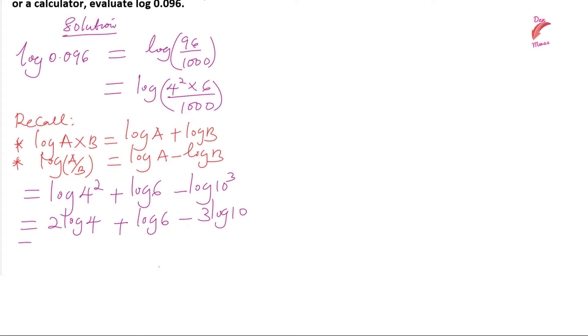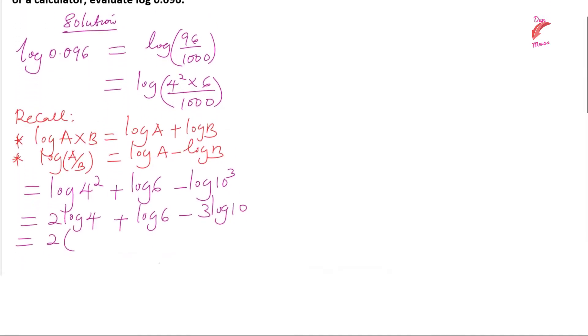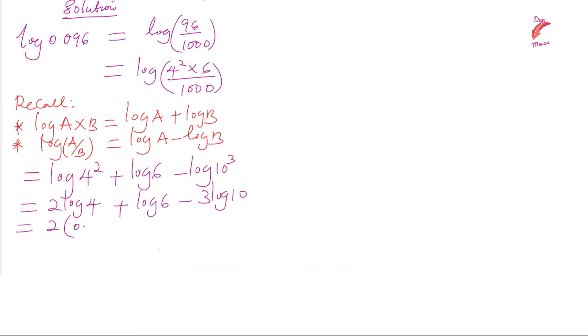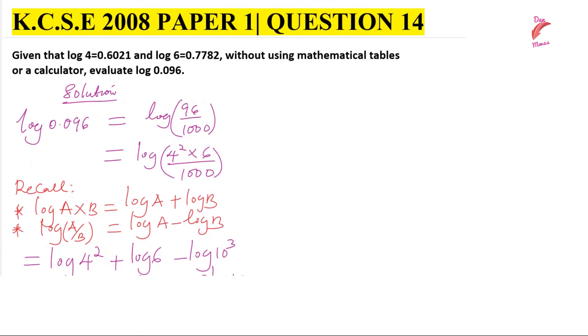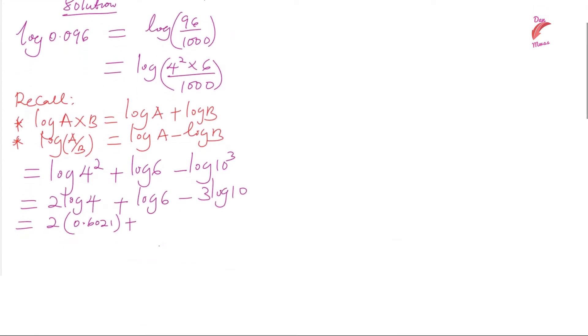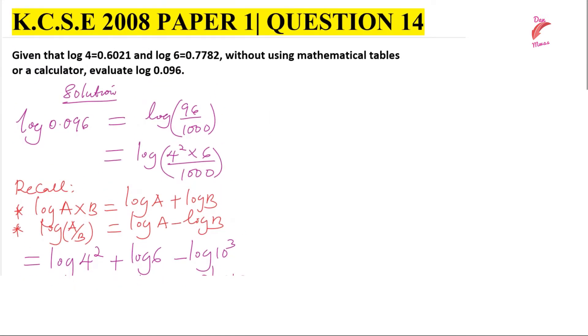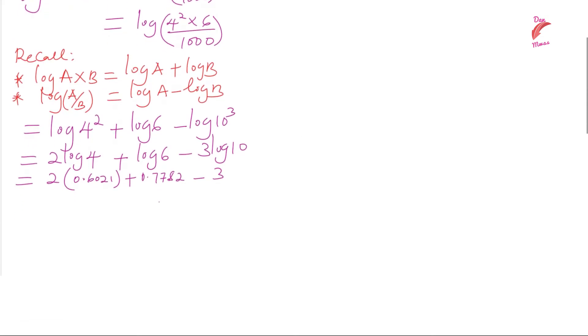From here we can now substitute the values. This is 2 times log 4, which we are given as 0.6021, plus log 6, which we are given as 0.7782, then minus 3. Since logarithm of 10 to the base of 10 is 1, this will be 3 times 1, which is 3.